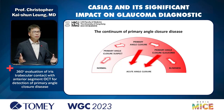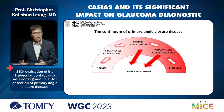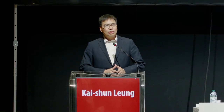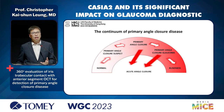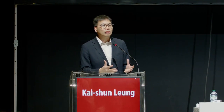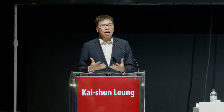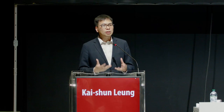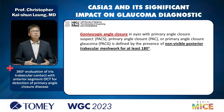Primary angle closure disease is a continuum with different stages — from normal to PACS, PAC, and PACG — a spectrum of varying stages. In some patients with PAC or PACG, some may develop acute angle closure. All these terminologies are based on the idea that these eyes have narrow angle or angle closure. But how do we define angle closure? Typically we rely on gonioscopy.